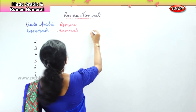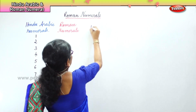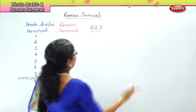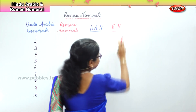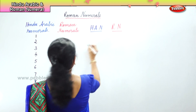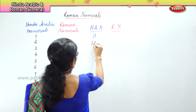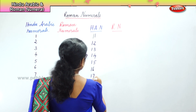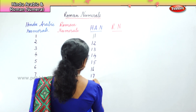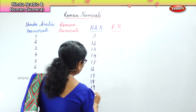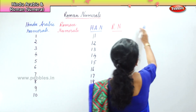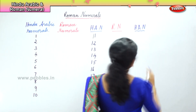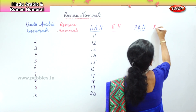Again, Hindu-Arabic numeral and then Roman numeral. Now here we'll write eleven through twenty — two, three, four, five, six, seven, eight, nine and twenty. And next you have Hindu-Arabic numeral and then Roman numeral.